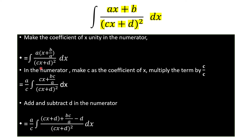The second step: in the numerator, make c the coefficient of x, because in the denominator you have c. Multiply the whole term by c/c. The c in the denominator moves out, and the numerator gets multiplied by c, giving cx + bc/a. So you have (a/c) × ∫(cx + bc/a) / (cx + d)² dx.